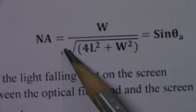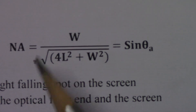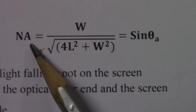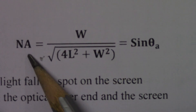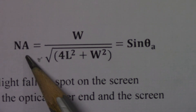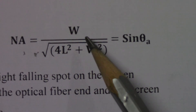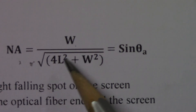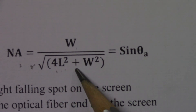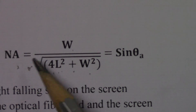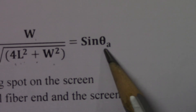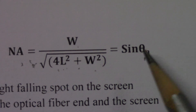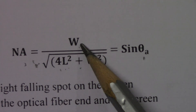Now coming to the formula to measure the numerical aperture. Numerical aperture is the light gathering ability of an optical fiber. To measure it, we use the formula: NA = W / √(4L² + W²). You also know that NA is equal to sin(θ_a) from the definition.